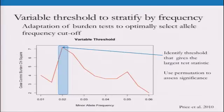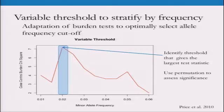Another approach is to do a variable threshold, which adapts all of these burden tests. You complete a burden test — those are the chi-squared values for different minor allele frequency cutoffs — and you need to figure out which cutoff works best for the gene you're looking at. You can permute your data, shuffling it around, to determine what's significant.